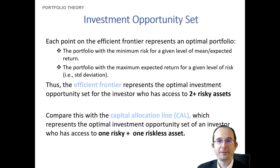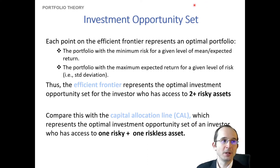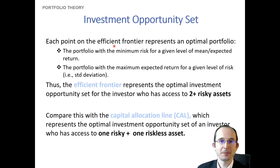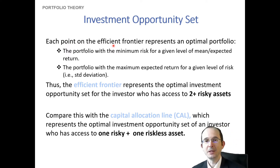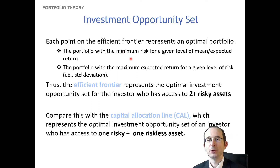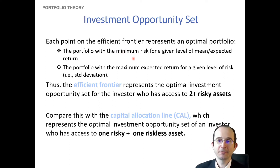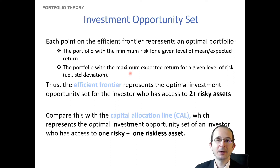If all we have is risky assets, then the investment opportunity set is just comprised of all points on the efficient frontier. Either we can say that, given our level of expected returns, a point gets us the minimum risk for that level, or we can say that given a certain level of risk, that's a point that gets us the maximum possible expected return.